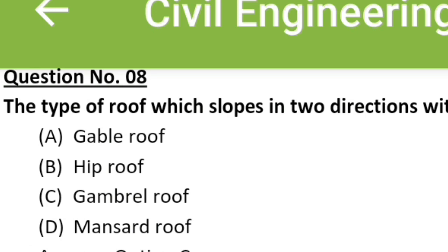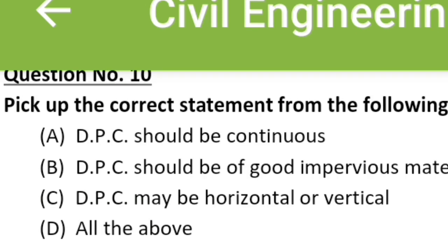The type of roof which slopes in two directions with a break in the slope of each side is known as: Option A: gable roof, Option B: hip roof, Option C: gambrel roof, Option D: mansard roof. The correct answer is Option C: gambrel roof.